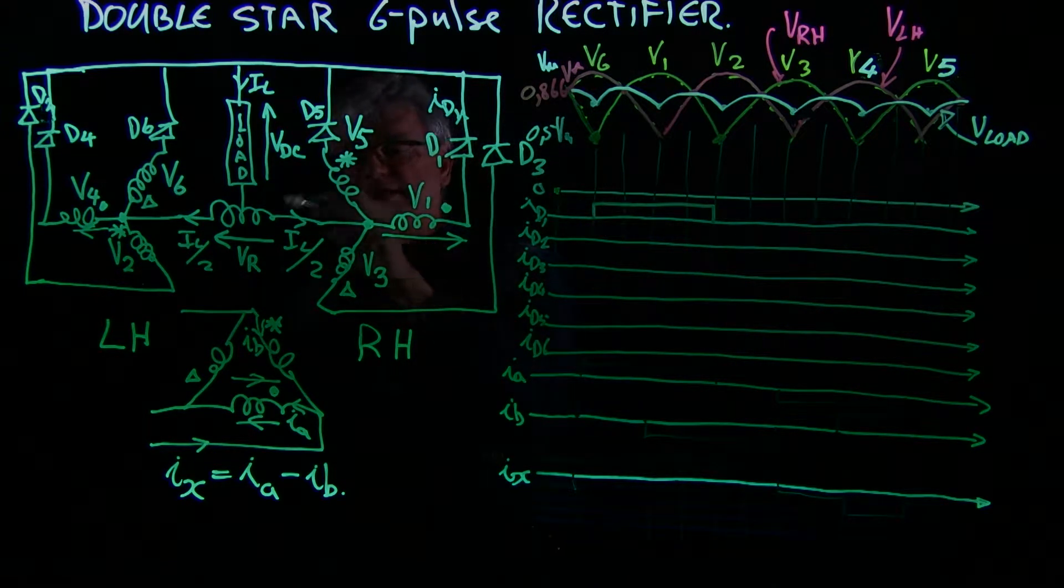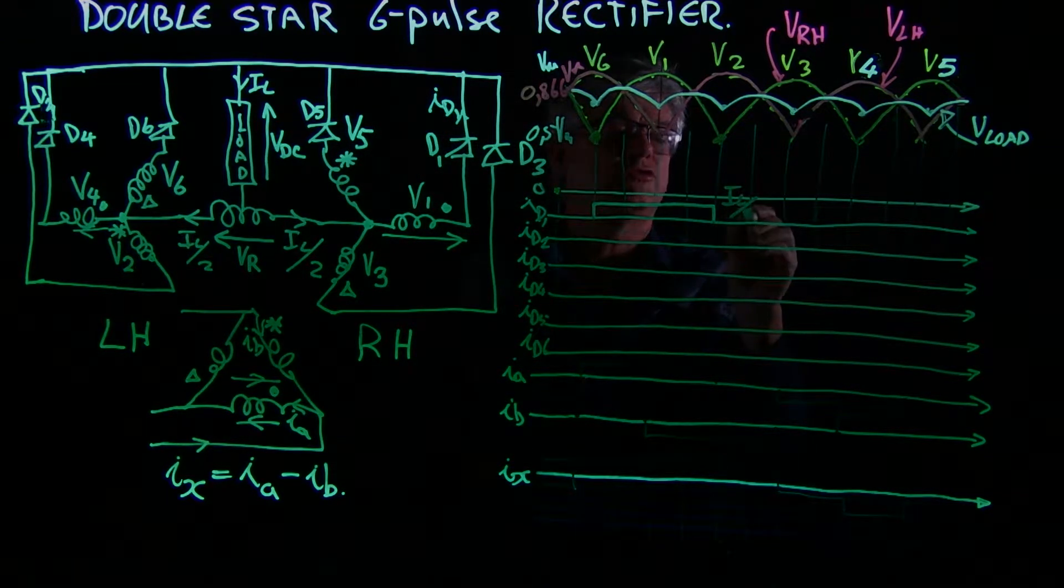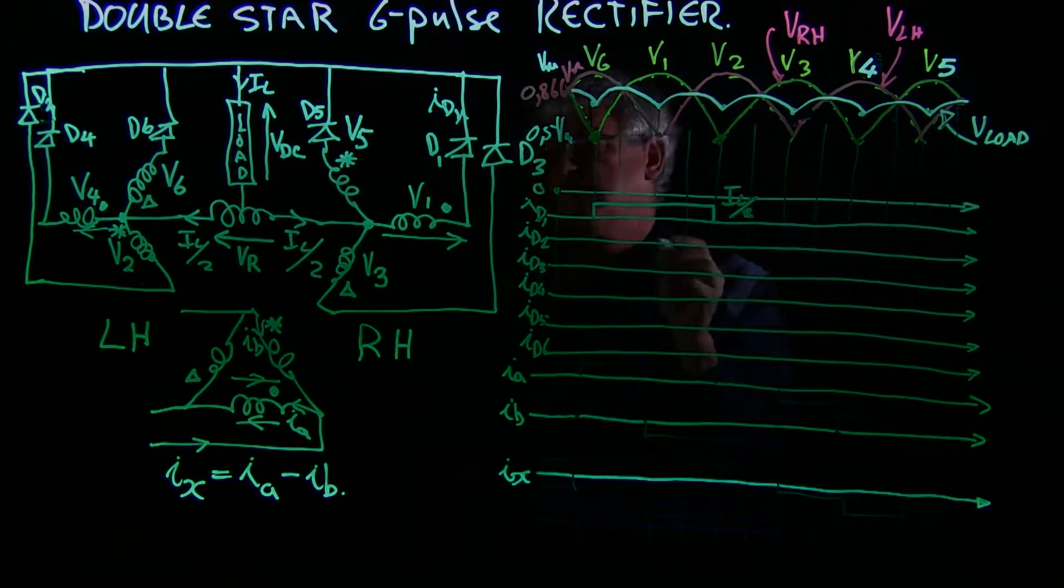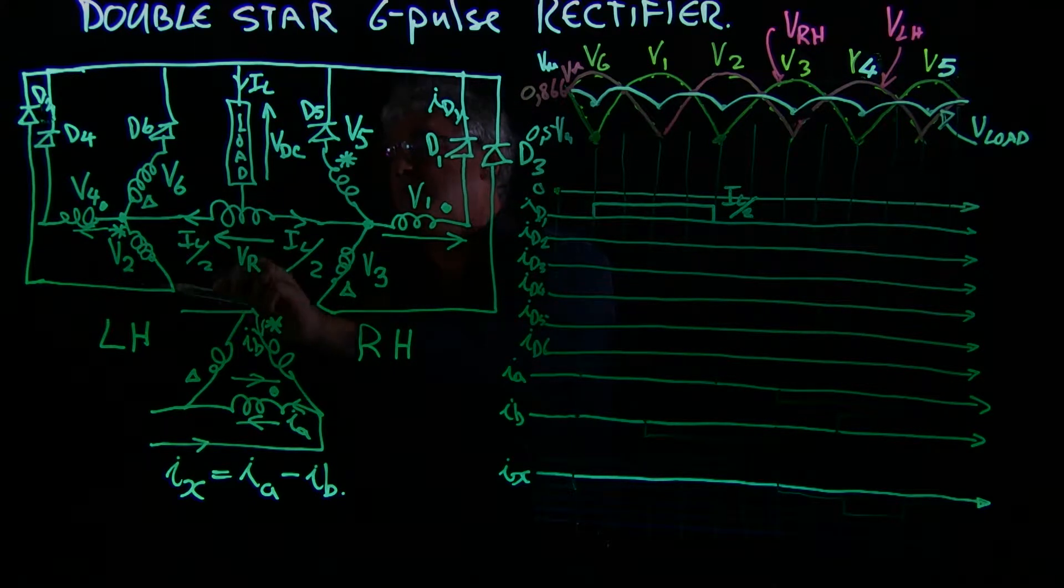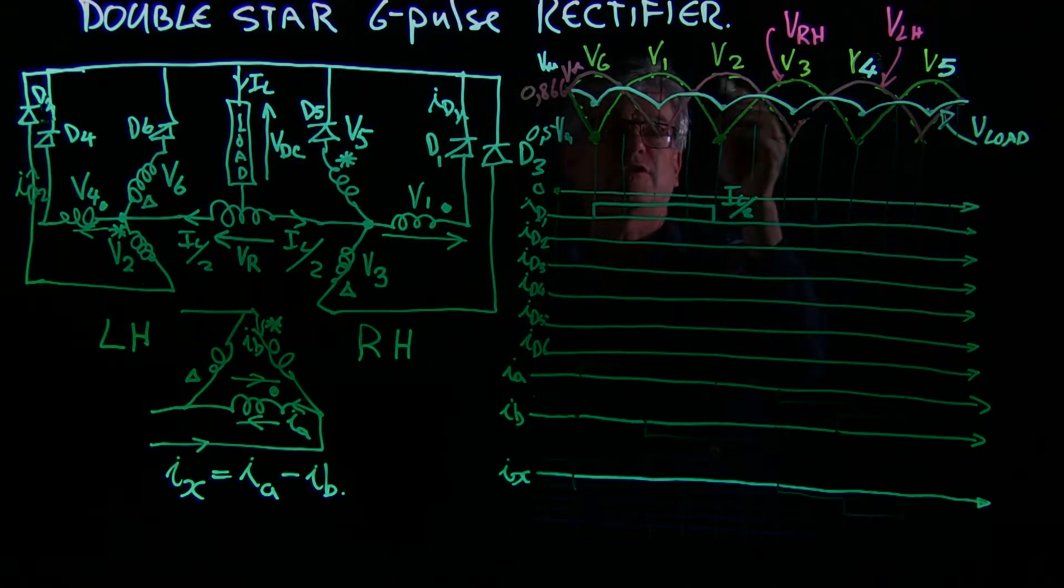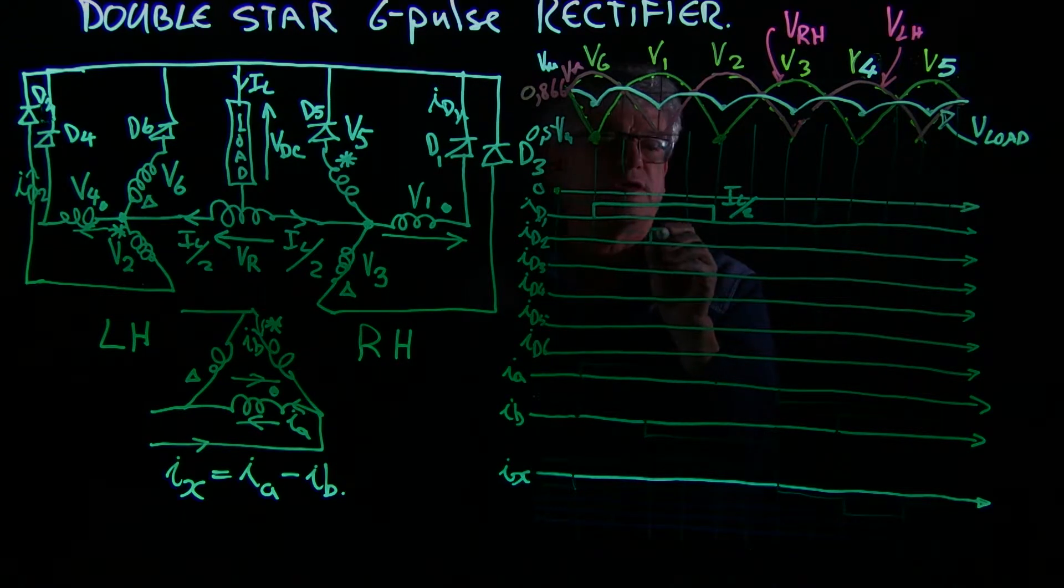And the current that is flowing there is IL over 2. That is the magnitude. When we go to V2, the current flowing in ID2 is the current that flows while V2 is the most positive, which is from here